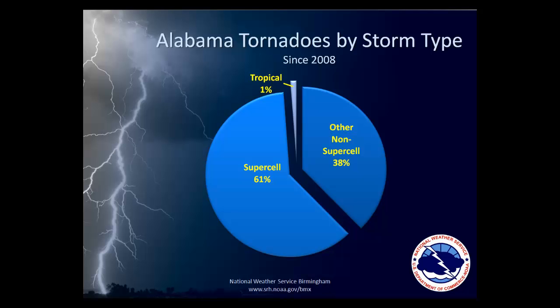Over the past four years, from 2008 through 2011, 61% of the tornadoes in central Alabama came from supercell thunderstorms. The remaining 39% came from thunderstorm types other than supercells, such as squall lines and tropical storm rain bands. That's an important thing to remember: other thunderstorm types besides supercells can produce tornadoes.